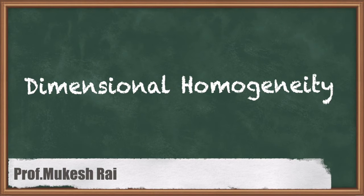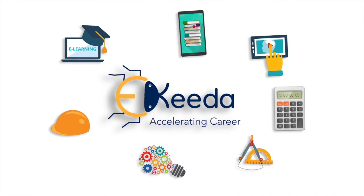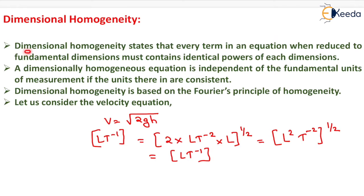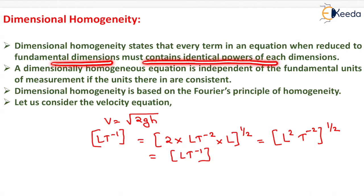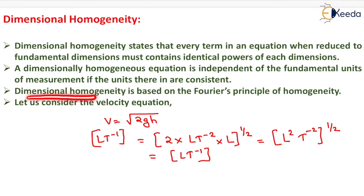Hello students, today we are going to study dimensional homogeneity. Dimensional homogeneity states that every term in an equation, when reduced to fundamental dimensions, must contain identical powers of each dimension. A dimensionally homogeneous equation is independent of the fundamental units of measurement if the units therein are consistent. Dimensional homogeneity is based on Fourier's principle of homogeneity.